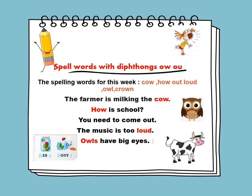This week, we will learn to spell words with diphthongs OW and OU. The spelling words for this week are: cow, how, out, loud, owl, and crown. Now let's learn to use the words in sentences.